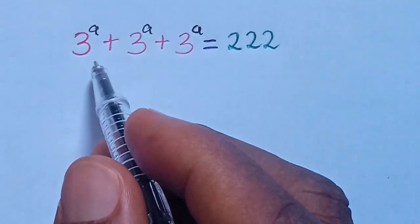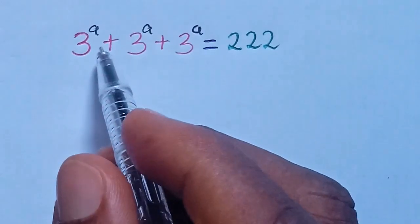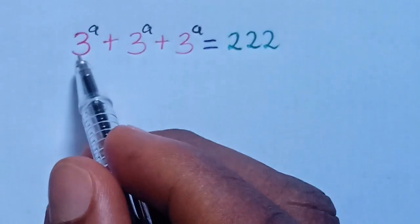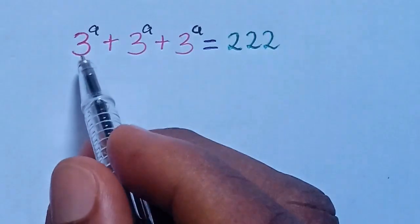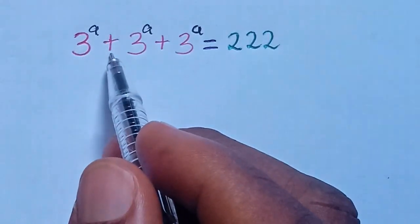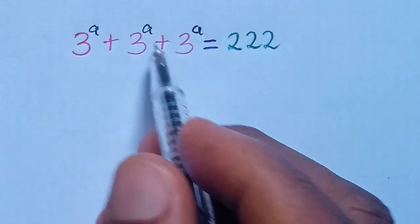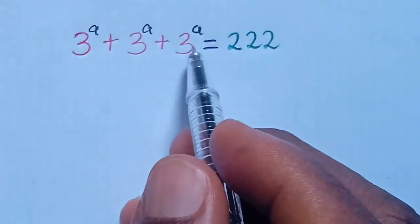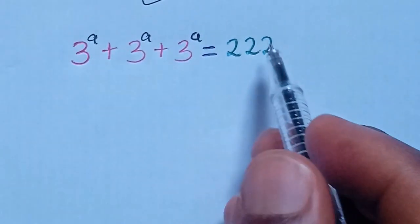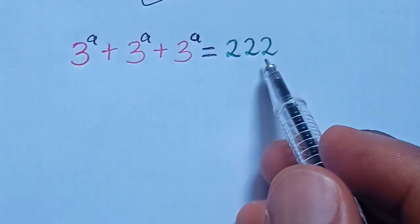Hello. What is the value of A? In this expression, we have 3 to the power of A plus 3 to the power of A plus 3 to the power of A equal to 222.